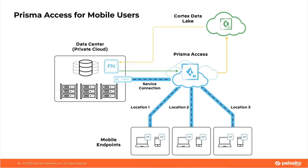If you're familiar with GlobalProtect, the functionality is very similar. Users connect to a portal, which decides the best available location for that user and connects them to it. The user builds an IPsec tunnel to that location and traffic is sent through the tunnel to Prisma Access. From Prisma Access, traffic is split — either directed out to the internet from the cloud service, or routed through a service connection to reach internal resources in your headquarters, data center, or cloud instance. All traffic is logged and sent to the Cortex Data Lake.